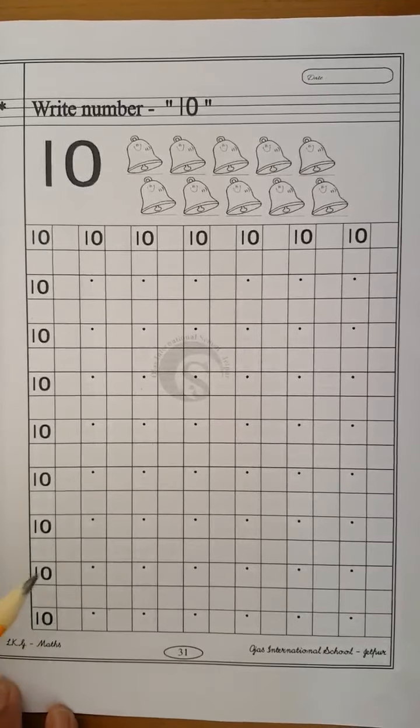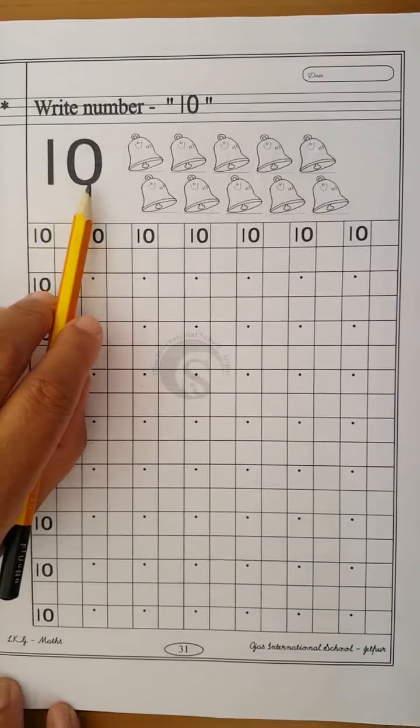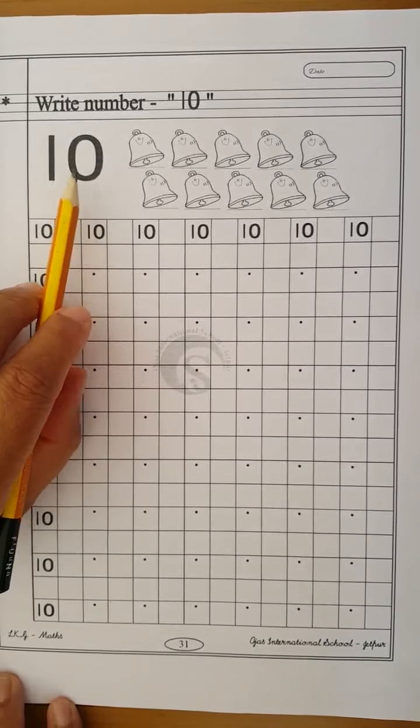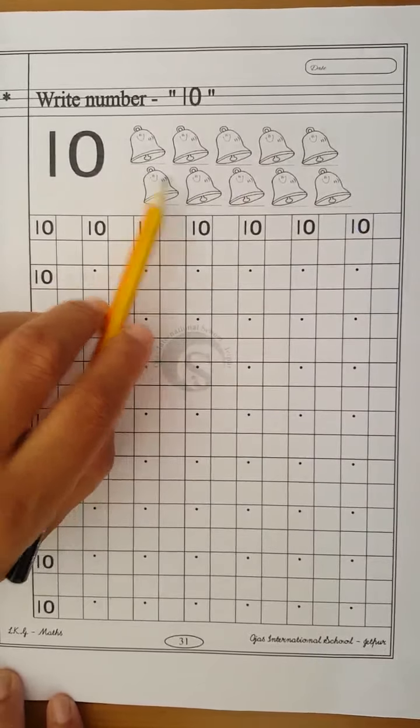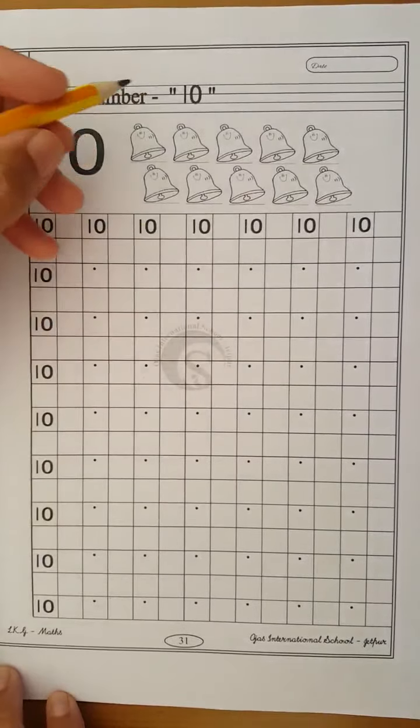So children, in this way you have to press number 10 in your pattern book. Now we will write number 10. This is number 10. And before writing number 10, first we count this object. What is this? These are bells. So first let's start counting.